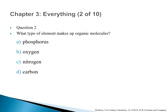Question 2: What type of element makes up organic molecules? A. Phosphorus. B. Oxygen. C. Nitrogen. D. Carbon. The correct answer is D — carbon. Organic molecules are carbon-based, although they may contain other atoms such as phosphorus, oxygen, nitrogen, and others, but they are mainly carbon and hydrogen.